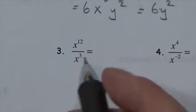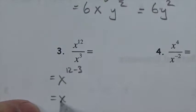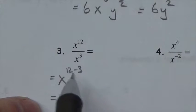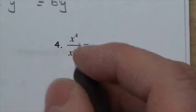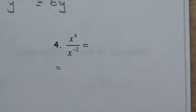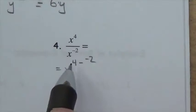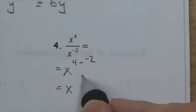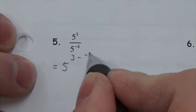For x to the 12 over x cubed: 12 minus 3 gives x to the ninth. For a case where the denominator has a negative exponent — don't let that throw you off. Division still means subtract the exponents; you're just subtracting a negative, which means you add, giving x to the sixth. Similarly, 5 cubed divided by 5 to the negative four becomes 5 to the power of 3 minus negative 4, which is 5 to the seventh.